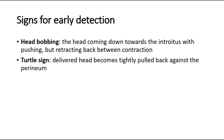What are some of the signs for early detection? One of the signs is the head bobbing sign, where the head comes down towards the introitus with pushing but then retracts back between contractions. Another sign is the turtle sign, where the delivered head becomes tightly pulled back against the perineum.